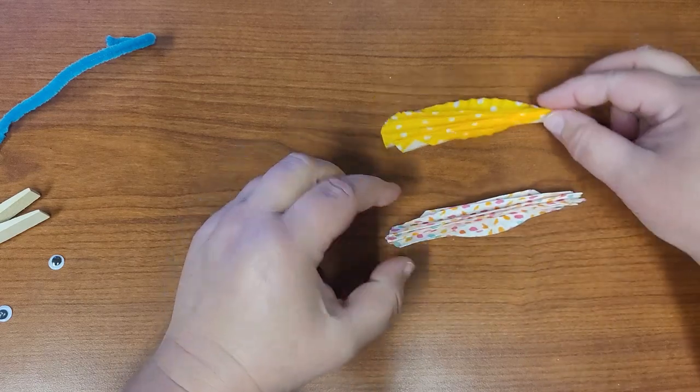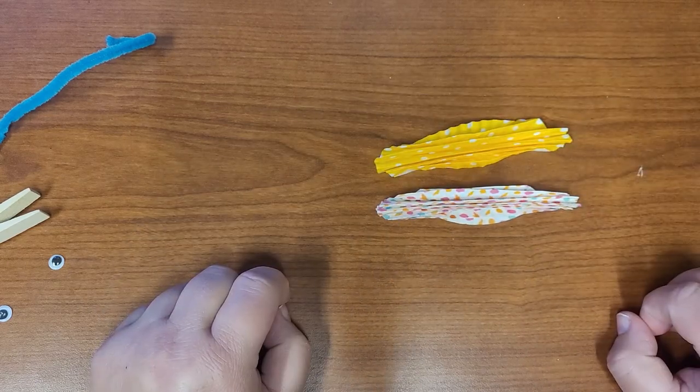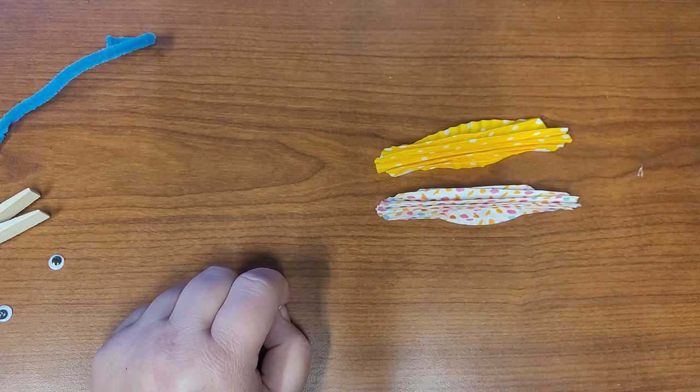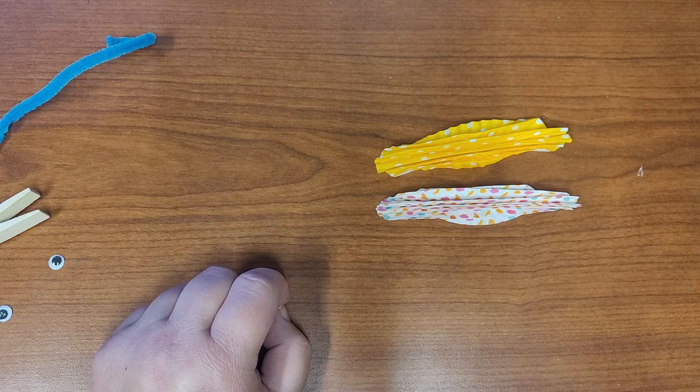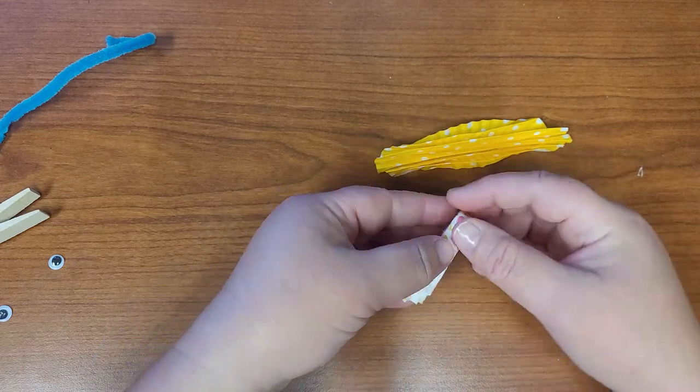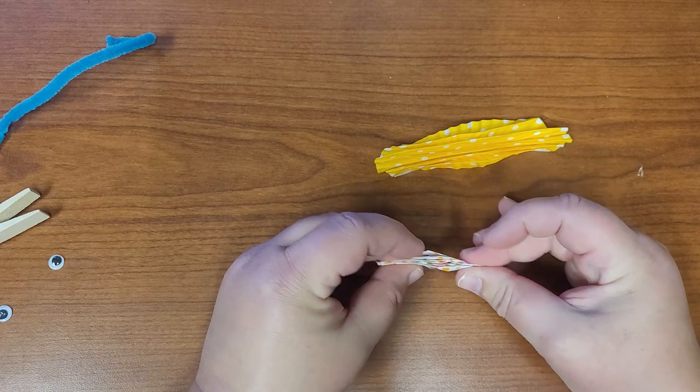All right, so you folded both of your cupcake liners and we are going to make the butterfly wings. All right so now we need to fold each one of these in half like that.